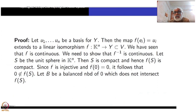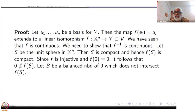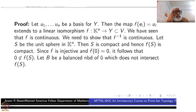Since f(S) is a compact subset and 0 is not in it, we can choose a neighborhood disjoint from it. We want to choose it as a balanced neighborhood. Any compact subset and a closed subset can be separated — that is what we have already seen. So choose B, a balanced neighborhood of 0, which does not intersect f(S).